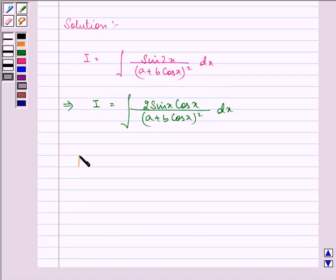Further, let us put a plus b cos x equal to t. So we have minus b sine x dx equal to dt.